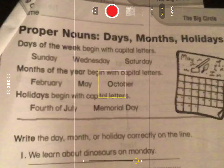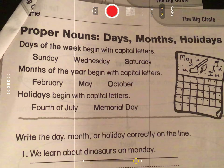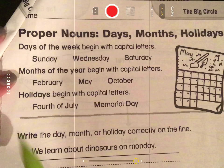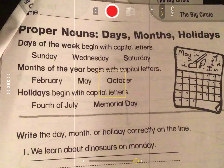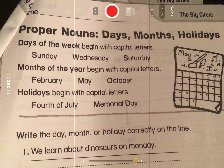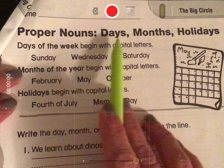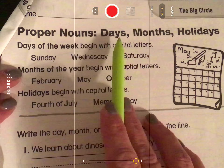We have been talking a lot about proper nouns. Remember, a noun is a person, place, or a thing. If it's a proper noun, it is a special name. Last week we talked about names and abbreviations. This week we're going to talk about special names and the days, the months, and the holidays — they are all proper nouns.